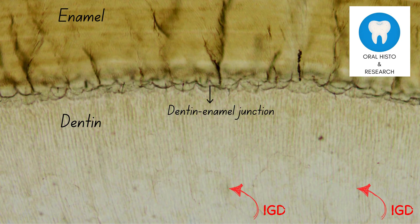The reason for its appearance is believed to be the non-fusion of calcospherites in this area to form a homogeneous mass. A decrease in vitamin D or an increase of fluoride could be attributed as potential risk factors for IGD development.